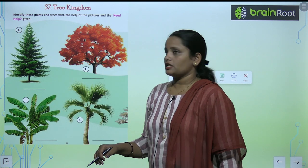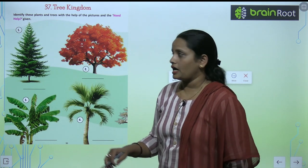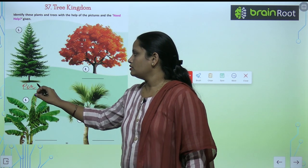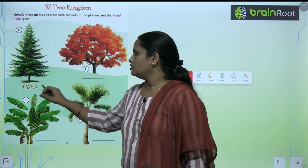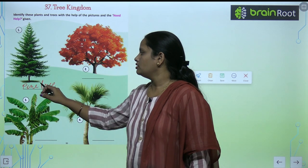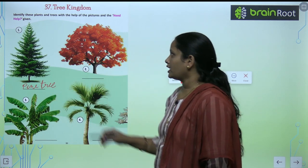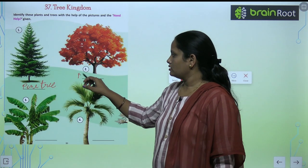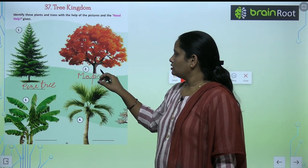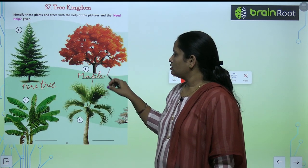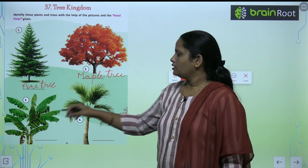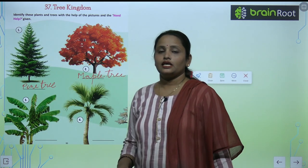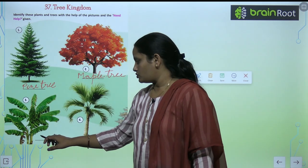So the first picture is of a pine tree. The second is of a maple tree. The third picture is very well known and this is a banana tree.